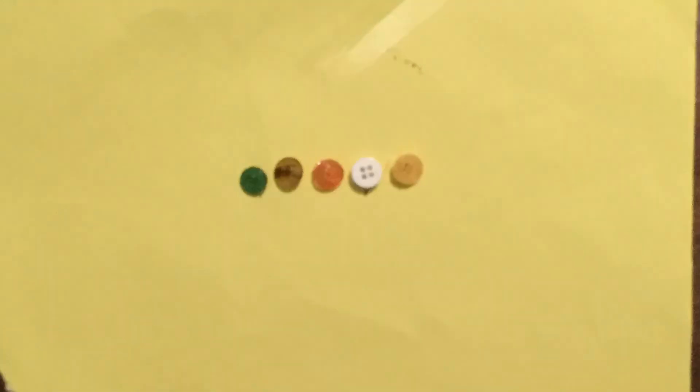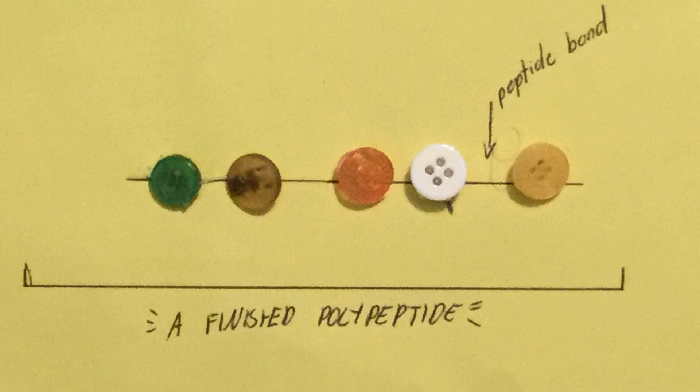The polypeptide chain is processed back into the cell where it can be moulded into the correct shape for its function, which will result in the final protein.